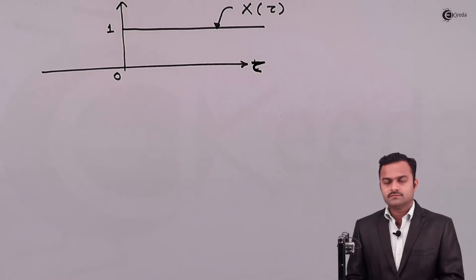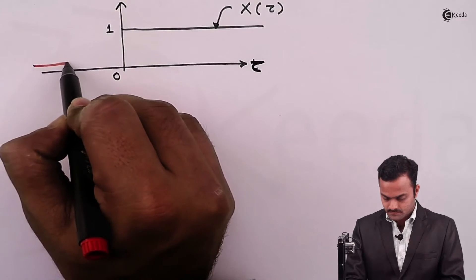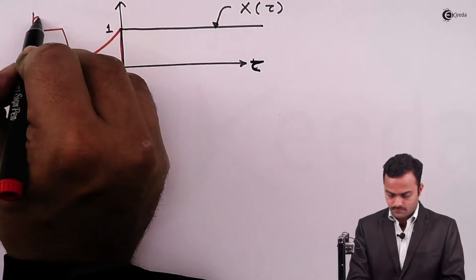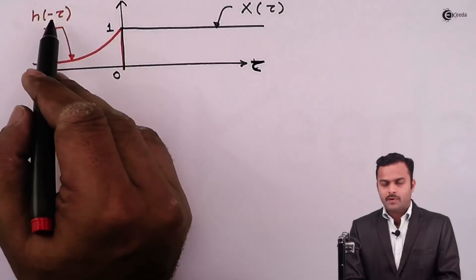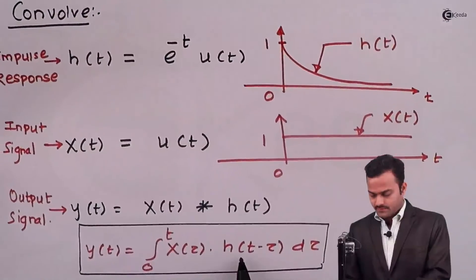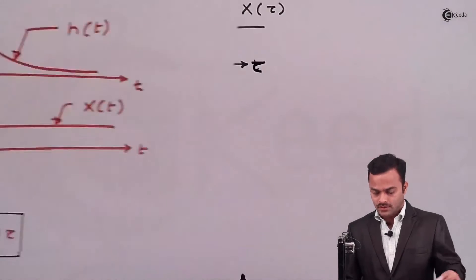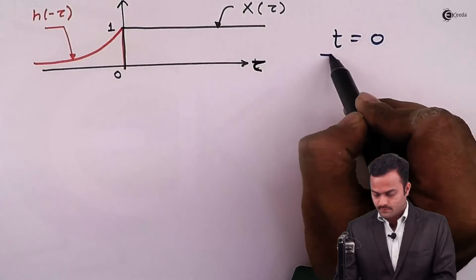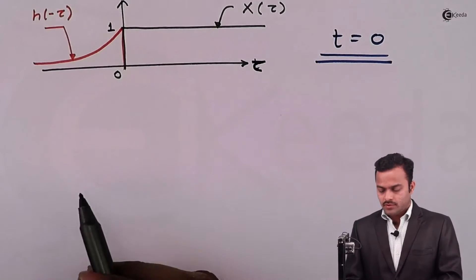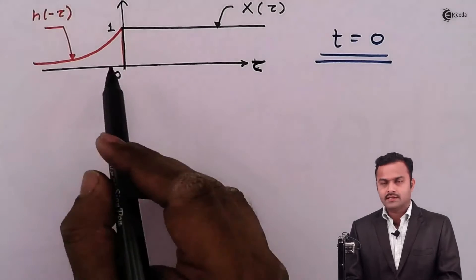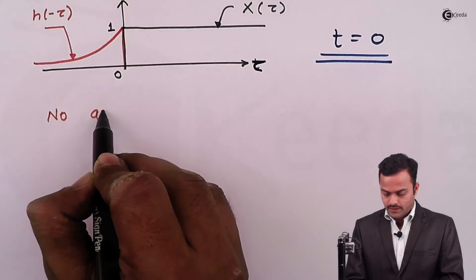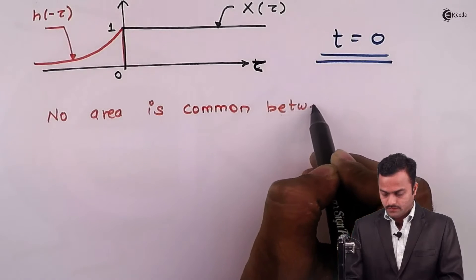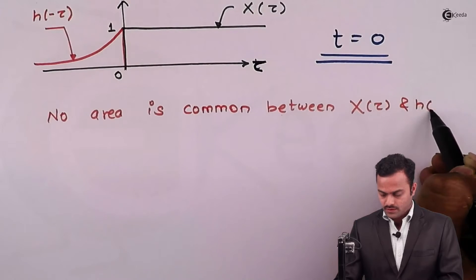So h(-tau) will look like the flipped version of h(tau). If we put t = 0, we get h(-tau), which corresponds to the case where the shift is zero. We are checking this because we will be evaluating y(t) at t = 0, where we can say no area is common between x(tau) and h(t - tau).